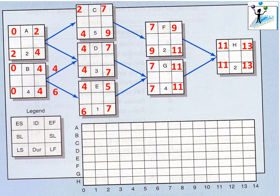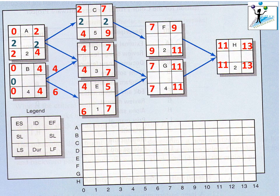Once you have completed the forward and backward pass, the next step is to calculate the float or slack. Float is calculated by subtracting early start from late start, or early finish from late finish. For Activity A, two minus zero equals two, so the float is two weeks — meaning Activity A can be delayed by two weeks without delaying the project. Activity C also has a float of two. Activity B has a float of zero, and Activity D also has a float of zero, making it a critical activity.